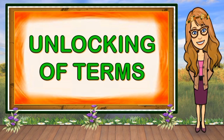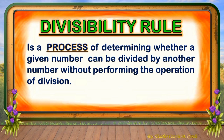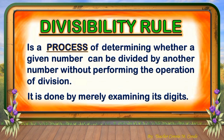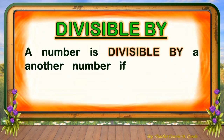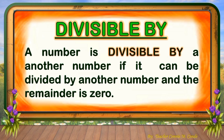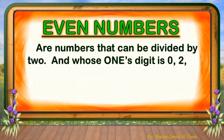Children, before we proceed further, let us unlock or define the terms that you may encounter during our class discussion. A divisibility rule is a process of determining whether a given number can be divided by another number without performing the operation of division. It is done by merely examining its digits. A number is divisible by another number if it can be divided by that number and the remainder is zero. Even numbers are numbers that can be divided by 2 and whose one's digit is 0, 2, 4, 6, or 8.